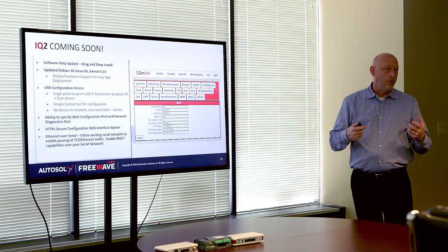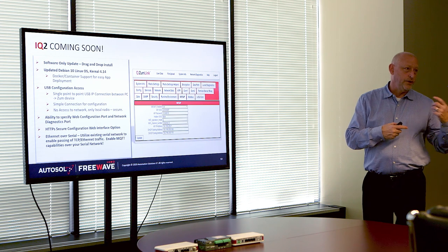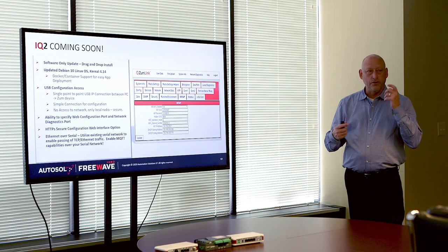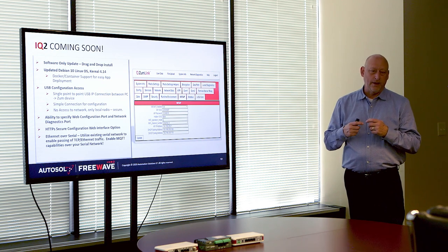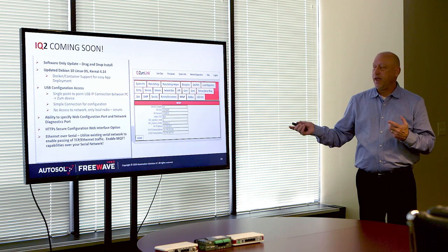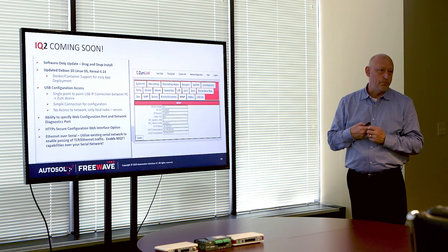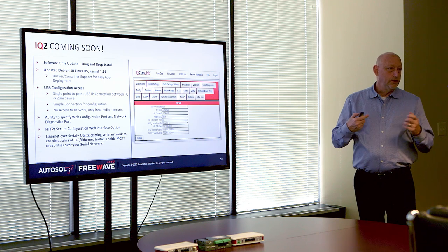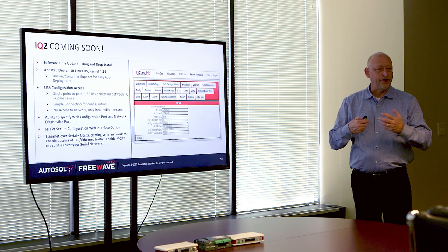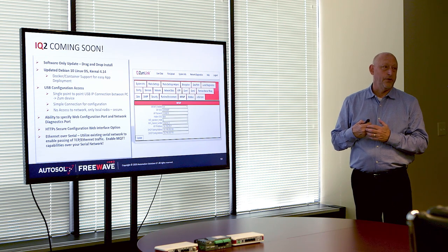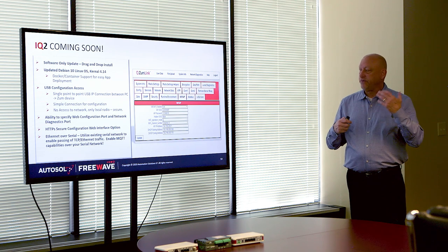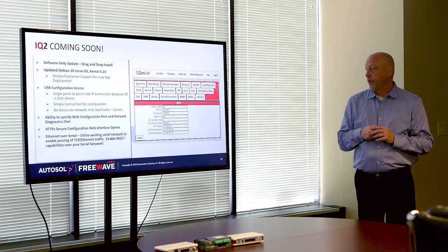IQ2 is also going to enable Ethernet capability over serial. You'd still be transmitting over the serial radio, but it will give you a smart interface so you can get more information on that radio and also allow computing at the edge. Most of the radios deployed in the previous generation are all serial radios, so this gives an upgrade path to customers so they don't have to do a rip and replace.